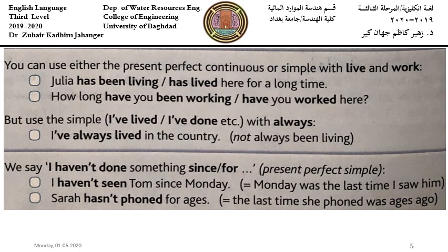You can use either the present perfect continuous or simple with verbs like 'live,' 'work,' and 'want.' For example: 'Julia has been living here for a long time' or 'Julia has lived here for a long time.' Or: 'how long have you been working here?' or 'how long have you worked here?' Both are acceptable.